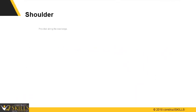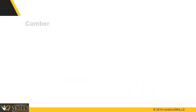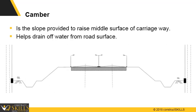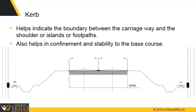Shoulders: provided on both sides of the road edges. They help accommodate stopped and emergency vehicles, and provide lateral support for base and surface courses. Camber: the slope provided to the carriageway to raise the middle surface, ensuring water will run off from the road surface into the side drainage systems. Curbs: help indicate the boundary between the carriageway and the shoulder, islands, or footpaths. They also help in confinement and stability to the base course.